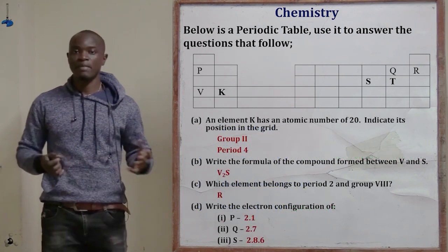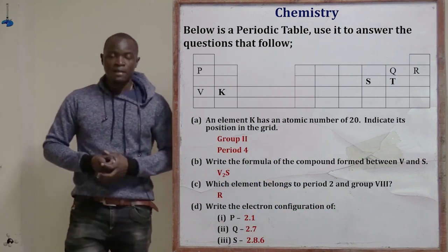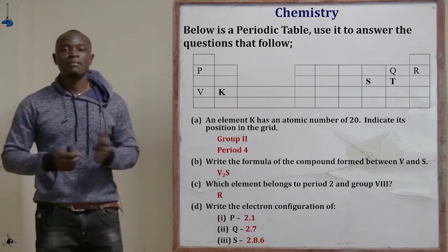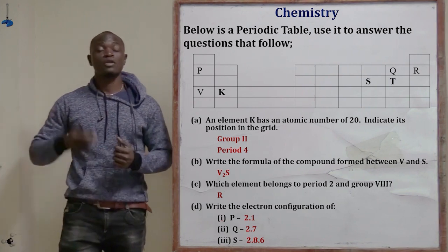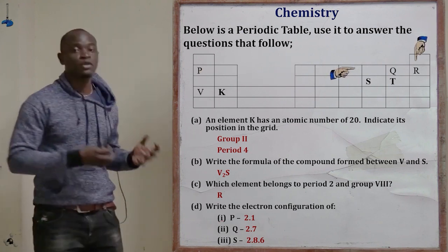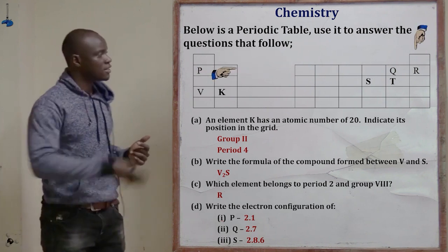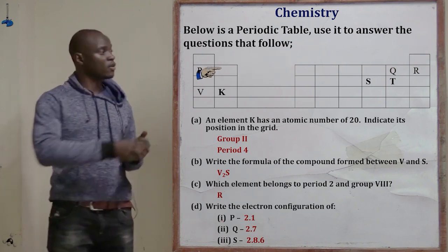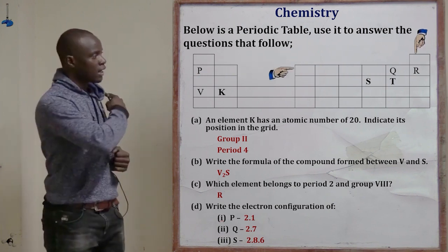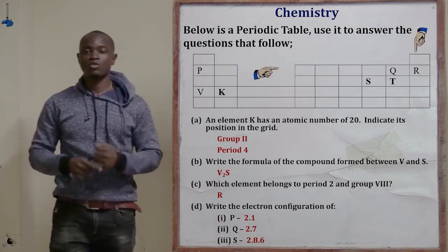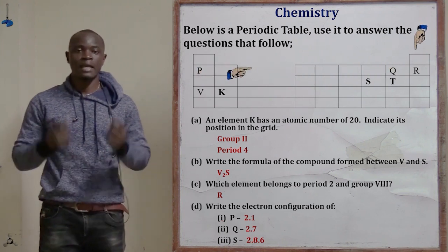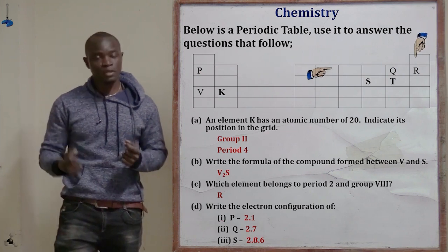Question (c) asks which element belongs to period 2 and group 8. Counting on the periodic table — period one, period two — and then across to group 8, we identify that element R is the element which is in period 2 and group number 8.